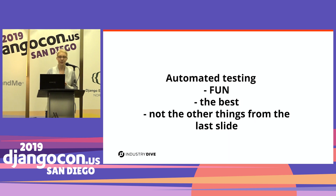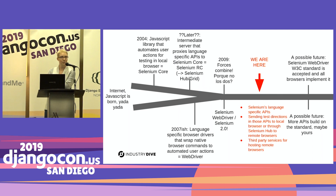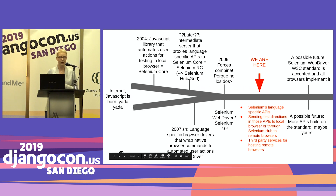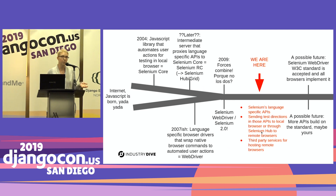Manual testing: boring, tedious, hard to reproduce. Automated testing: fun, the best, not any of that other stuff. Here's a drunk history version of Selenium. The internet was invented. A group of people made Selenium Core and Selenium RC — ability to automate stuff with a JavaScript library and push those directions to remote browsers. Other people were working on wrapping native browser commands instead. They combined forces, and so we are now here. We can use Selenium's language-specific APIs to send test directions to a local browser or through Selenium Hub to remote browsers.